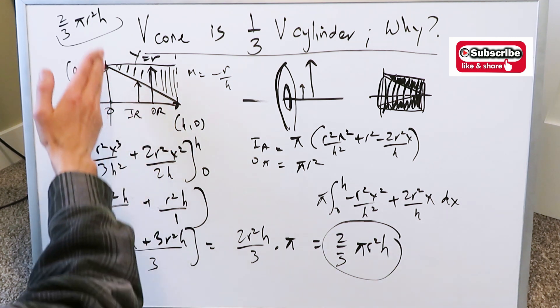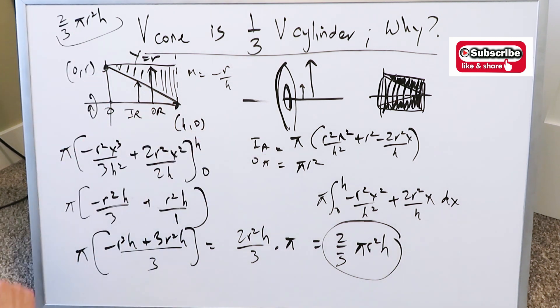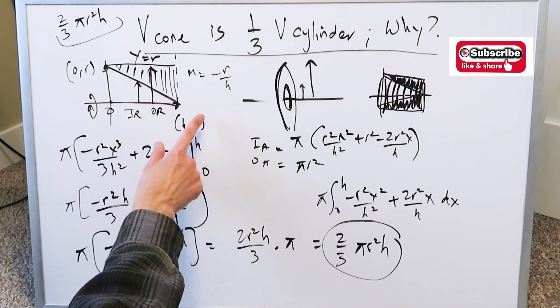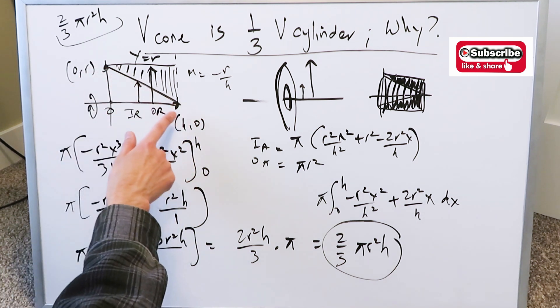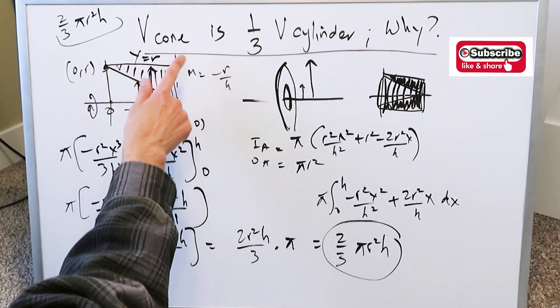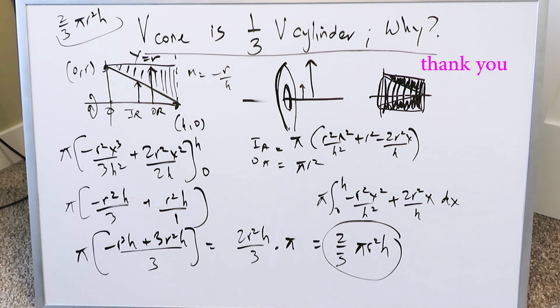Everything could have been done with respect to the y-axis and the outcome would be the same. Here we did everything with respect to the x-axis, and the diagonal line along with the horizontal line shows everything to be true. That's it for this video — thank you for watching, have a good day.